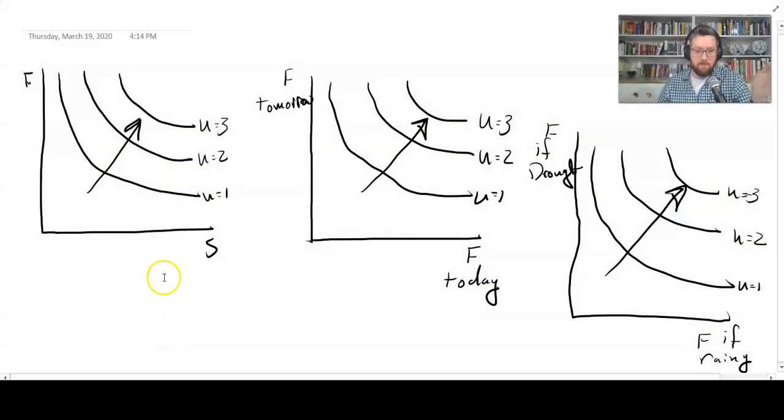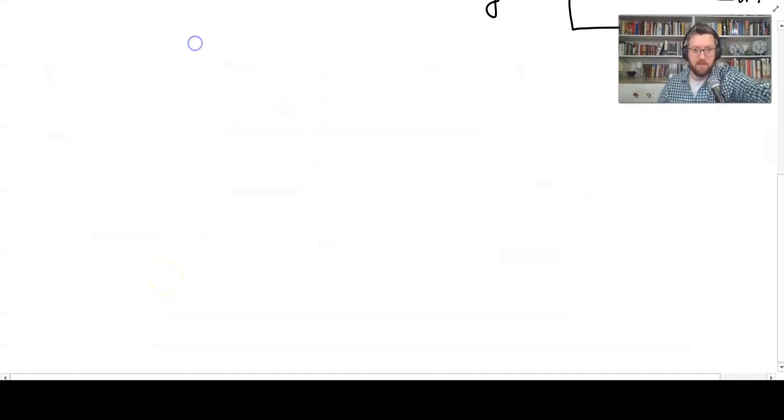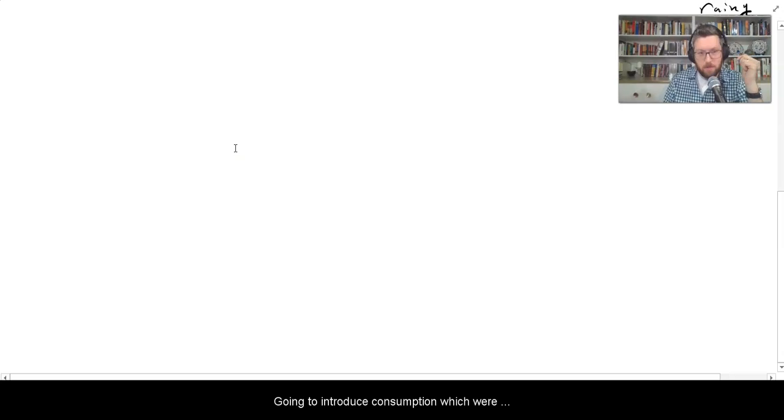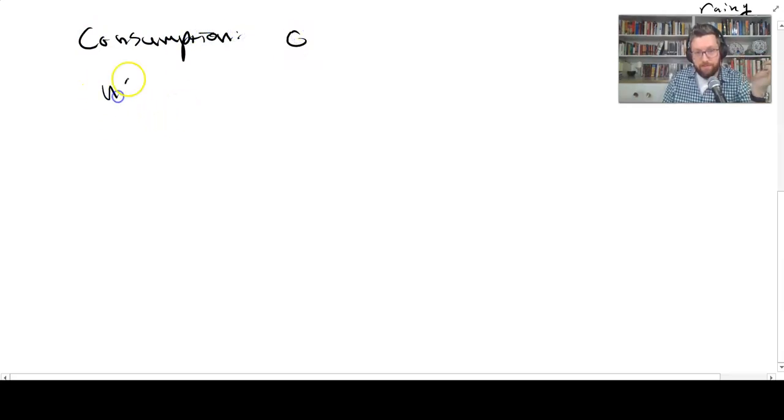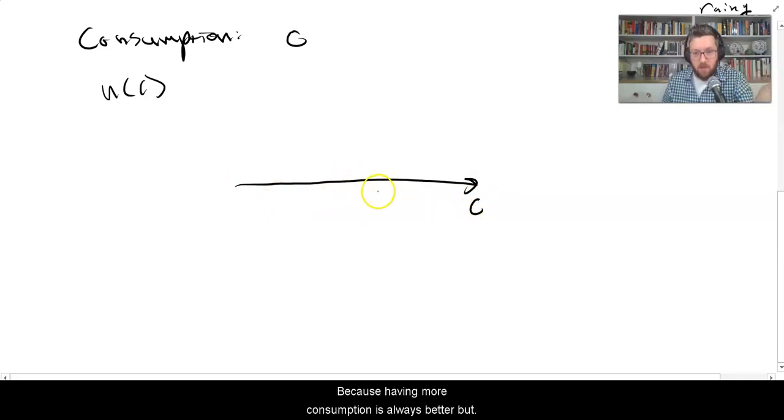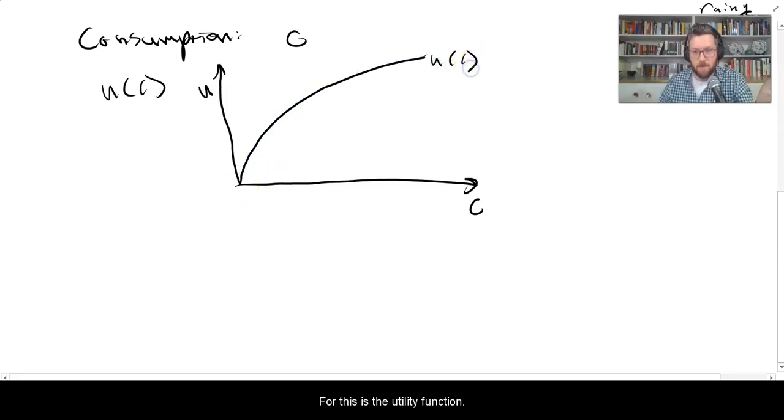So we introduce this, we're going to introduce consumption, which we're going to denote with the letter C, and the utility function is just has one argument now, C. So that's supposed to be U with a C in parentheses. And if we're going to draw this, we no longer really need two axes, because having more consumption is always better, but we'll find it's actually useful to start drawing something else. So on the vertical axis, we'll put utility and we'll start drawing figures like this where this is the utility function.